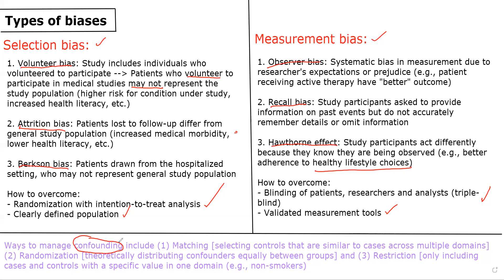For confounding, I wanted to focus on the ways that we counteract it rather than go through too many examples, since there are so many. As previously discussed, confounding involves a third variable associated both with the exposure and the outcome, but not along the causal pathway explaining the observed association. The three main ways to counteract confounding include matching, where you have a predefined set of cases and match them to controls who are similar across different domains that could be potential confounders, such as medical morbidity and demographics.